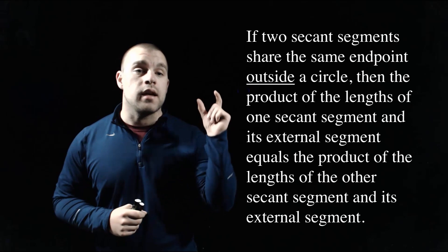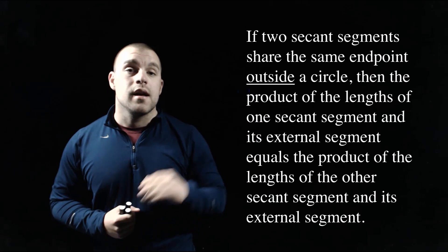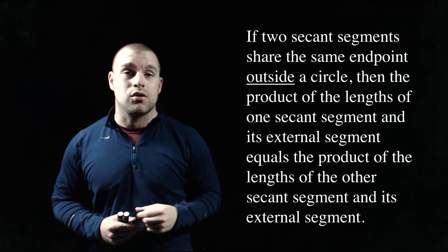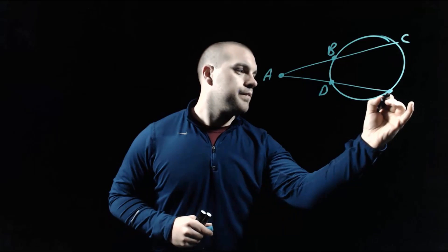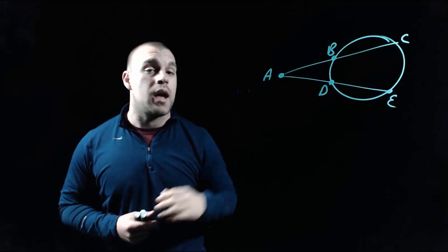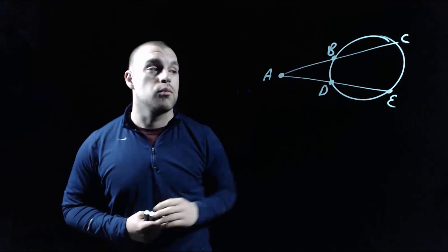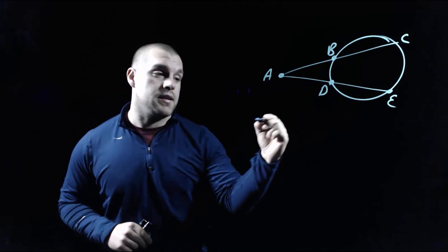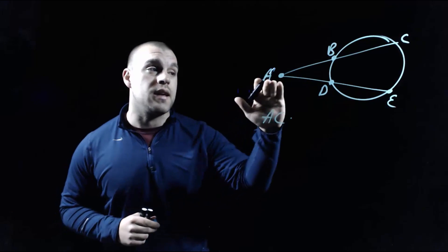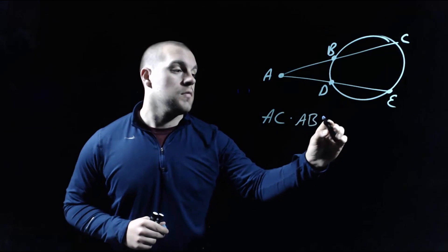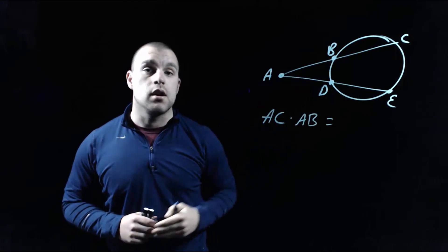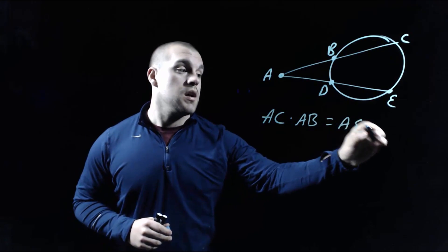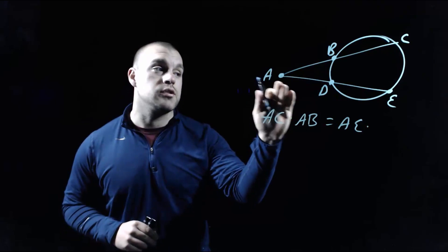Our next property deals with segments that have a common endpoint on the outside of our circle. If we take the length of one of those lines times its external portion, that has to equal the length of our other line times its external portion. Here in our picture, we've got two segments with a common external point A. One runs to point C going through point B; the other runs to point E going through point D. For the top segment, we take the entire length AC times the external piece AB, and that has to equal the entire length AE times its external portion AD.